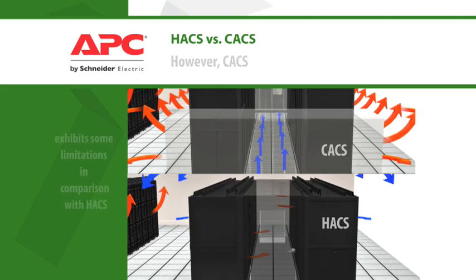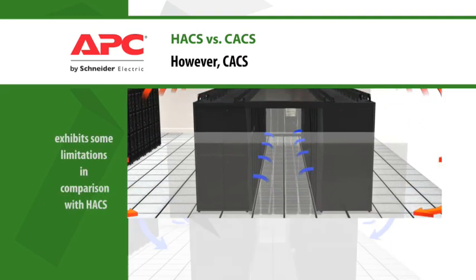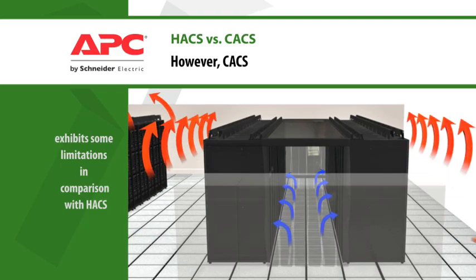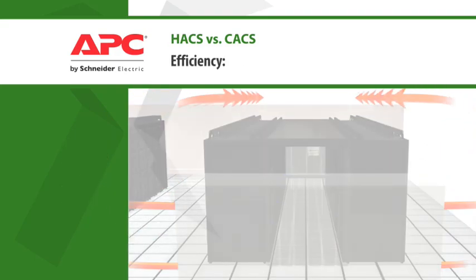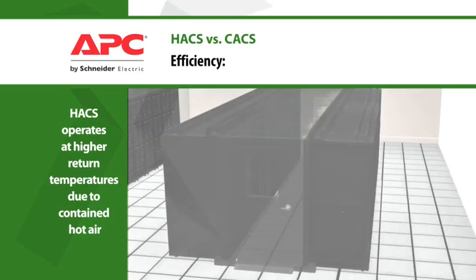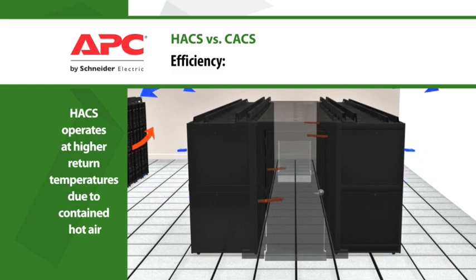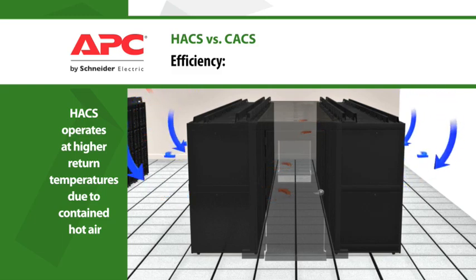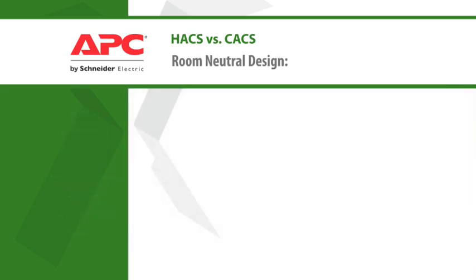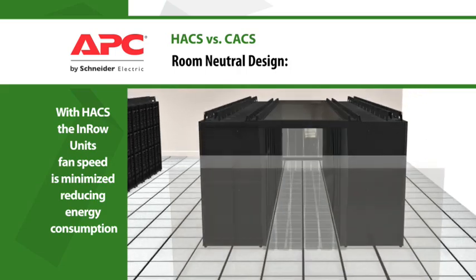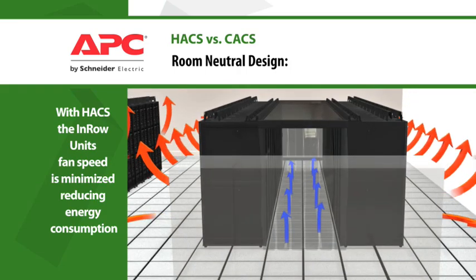While both the hot aisle and cold aisle systems help solve today's data center challenges, the cold aisle containment exhibits some limitations in comparison with the hot aisle system. With the hot air contained, the in-row cooling units are able to capture all of the heat from the IT equipment. Mixing from the room is also eliminated, which increases the return temperature, increasing cooling capacity and efficiency. With mixing eliminated, the in-row cooling system's variable speed is minimized, further reducing energy consumption.